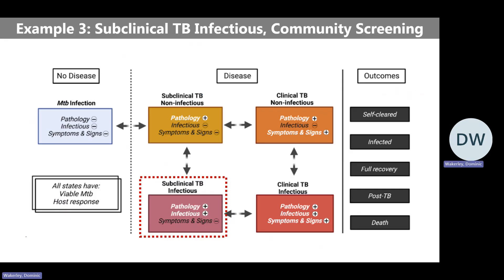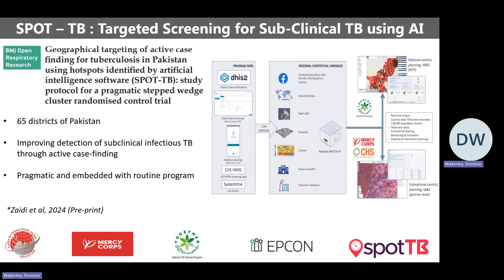A third example looks at the subclinical TB infectious stage, where individuals have bacteriological positivity. A trial I've been working on for my PhD examines targeted active case finding using artificial intelligence software — guiding screening events to locations where increased transmission is potentially detected through AI. This focuses on the subclinical infectious group. The framework has helped reorient conversations in this area: where there was much debate about whether active case finding is beneficial or cost-effective, using 'subclinical infectious' as a specific term helps differentiate this intervention from standard clinic care. The protocol paper should be published shortly.